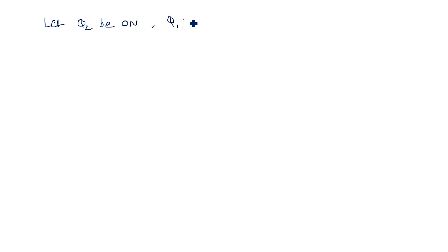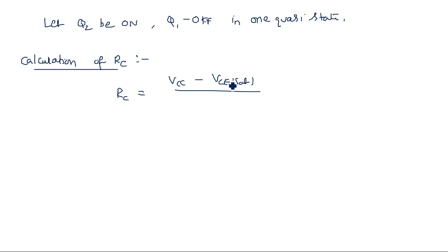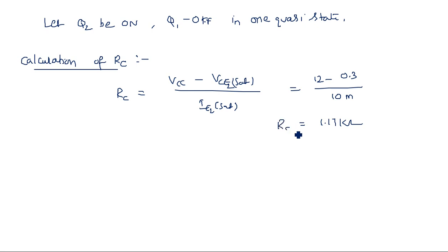Let Q2 be on and Q1 be off in one quasi-stable state. For the calculation of collector resistance RC: RC = (VCC − VCE_sat) / IC2_sat = (12 − 0.3) / 10 mA = 1.17 kilohms.